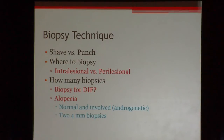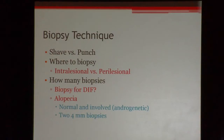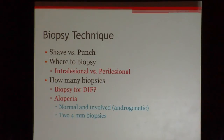Where to biopsy — this is important. Usually for spongiotic dermatitis cases, you want to be intralesional. But for scarring alopecia, don't take it intralesional; you're just going to see a scar. Go perilesional, at the advancing border, something a little more active and not quite scarred. And if you're taking a biopsy for DIF — direct immunofluorescence — for a blistering disorder, don't take intralesional. Take perilesional, because you can have a false negative if you take it intralesional.